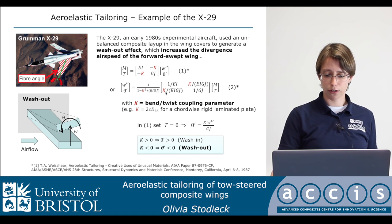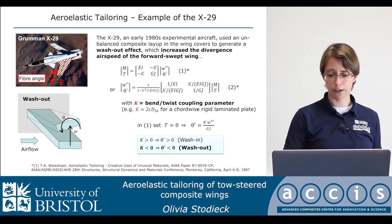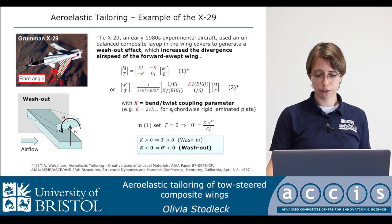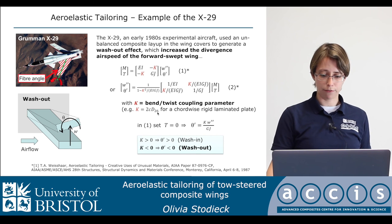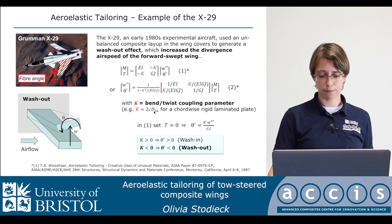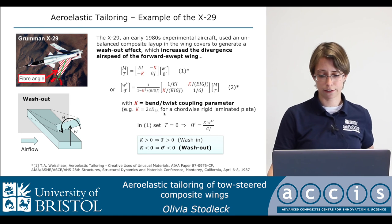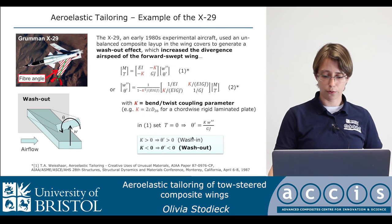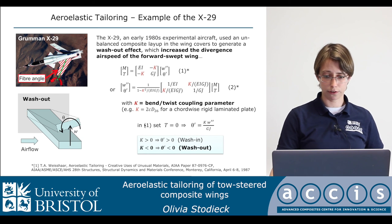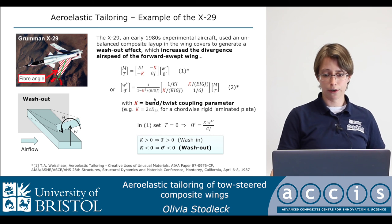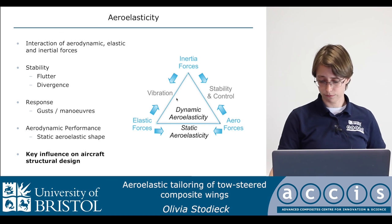This bending-twist coupling can be induced by using an unbalanced laminate. For a UD laminate, we can consider the composite stiffness terms — particularly D16 and D26 — and relate these to the coupling term K. If we have a negative K term, we get a negative twist rate, which is equivalent to washout. This was achieved using straight fiber laminates, which is what has traditionally been done.